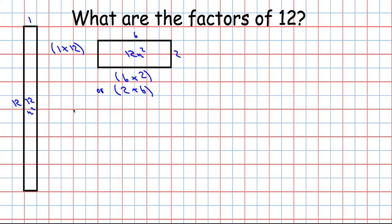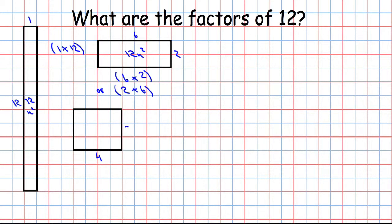From my times tables I know that 3 times 4 will give me 12. So 3 times 4: the width of this rectangle is 4 and the height is 3. 3 units times 4 units is 12 units squared. So another factor pair is 3 and 4.